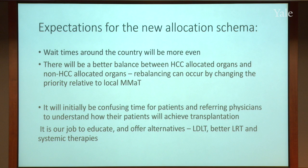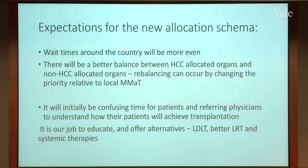What are some of the expectations? We think there's going to be a better balance between hepatocellular carcinoma and non-HCC patients. Initially it will be a confusing time for patients and referring colleagues, and we will help walk through it. There are alternatives to consider: living donor liver transplant takes patients toward transplant outside the standard allocation system. Advances in local regional therapy will keep patients on the list longer in better condition. And in the future, systemic therapies may be combined to make patients who are not candidates now candidates in the future.